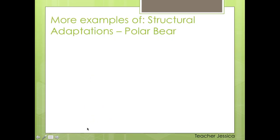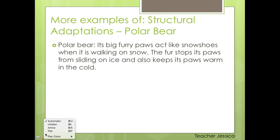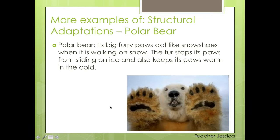Let's see another example. I love talking about polar bear as an example of adaptation. The first thing we can see in the polar bear is they have big furry paws that act like snowshoes when the polar bear is walking on the snow. The paws act like snowshoes — the fur stops the paws from sliding on ice and also keeps the paws warm in the cold. It's just like protecting the polar bear. Did you understand? This is an adaptation to live in the environment.